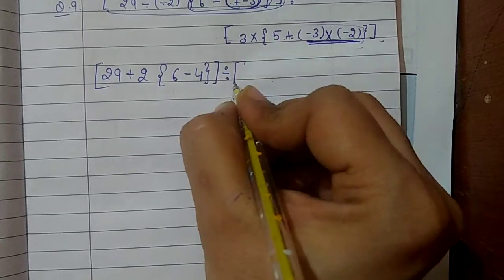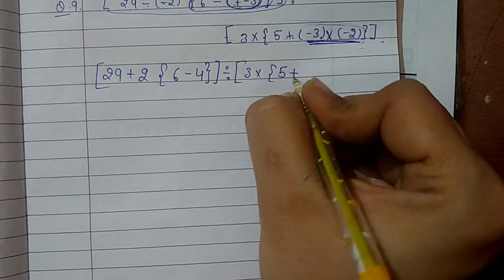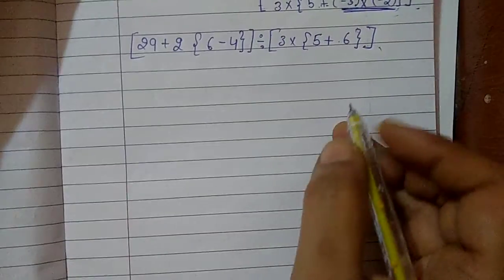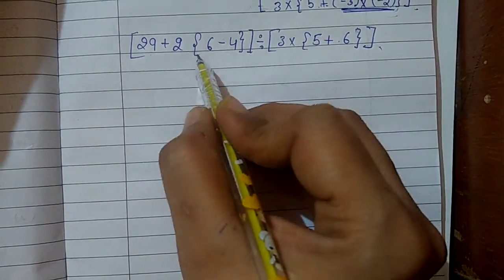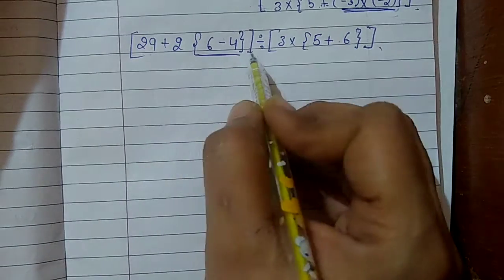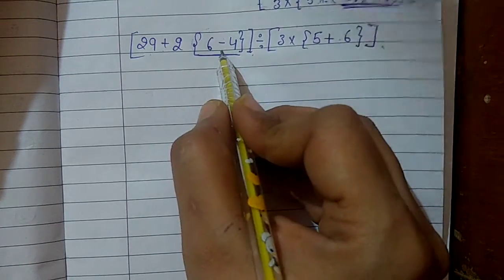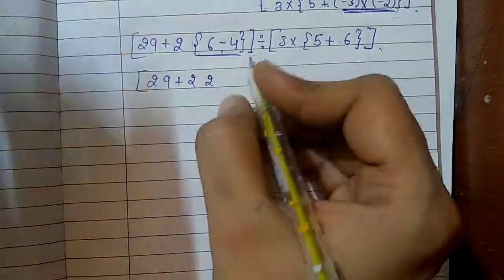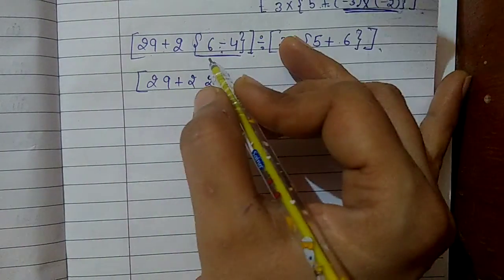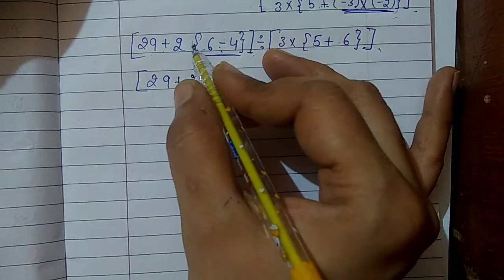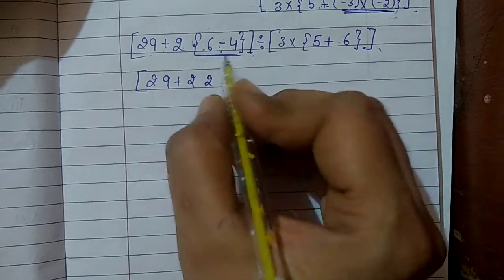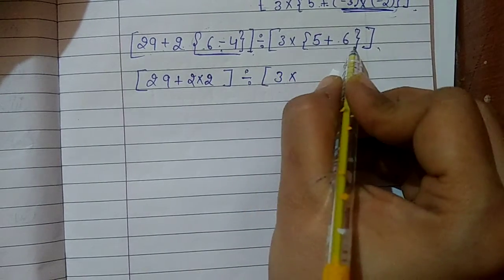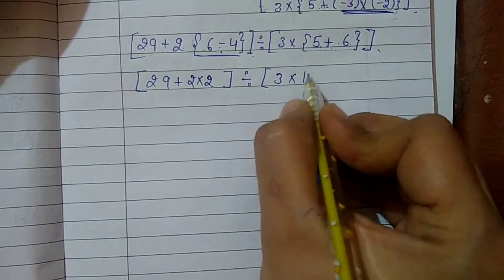Multiplication. That means first I will solve this. Rest of the things will be as it is: 5 plus, 3 multiply. No need to put the plus sign — we can ignore it. Now you can see, in this bracket I will solve this bracket first because again one more bracket is here. When I come to solve this bracket, addition is here and bracket is here, so first I will solve the bracket. So it will be 29 plus 2, and 6 minus 4 is 2. Now this bracket is solved. There is no sign between these two numbers, so whenever a number is outside the bracket without carrying any sign, it means they are going to multiply. Now, 3 multiply — in this bracket, again one more bracket is here, a multiplication bracket, so first the bracket will be solved: 6 plus 5 is 11.